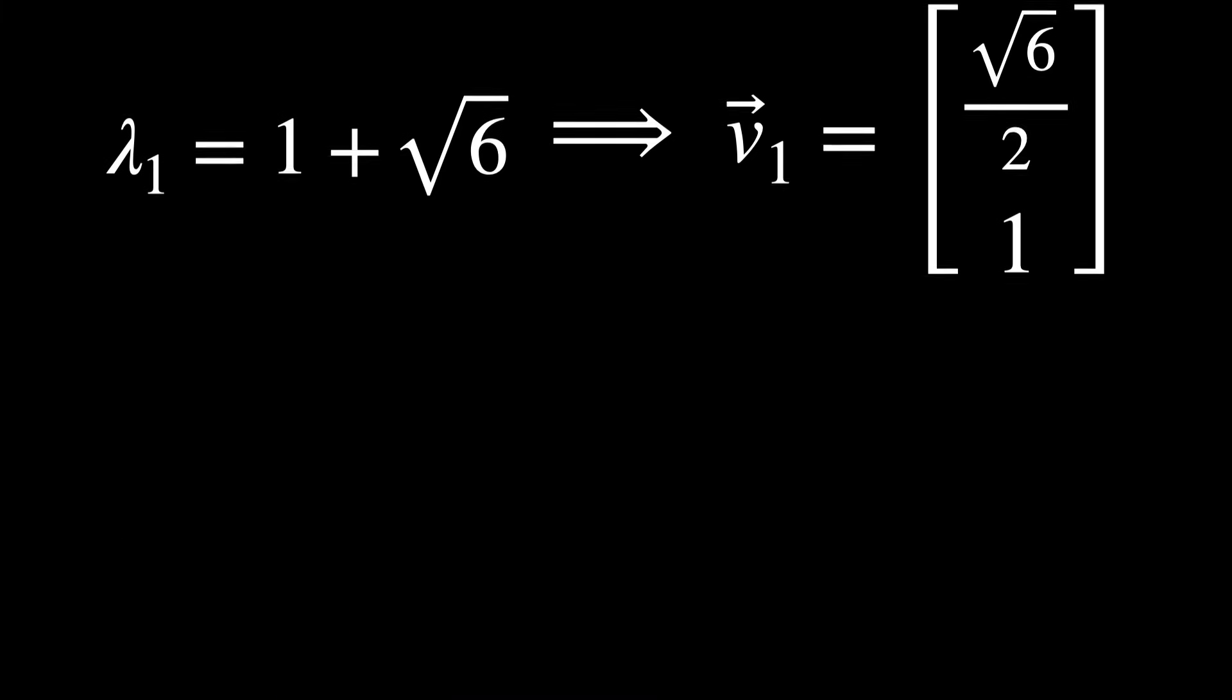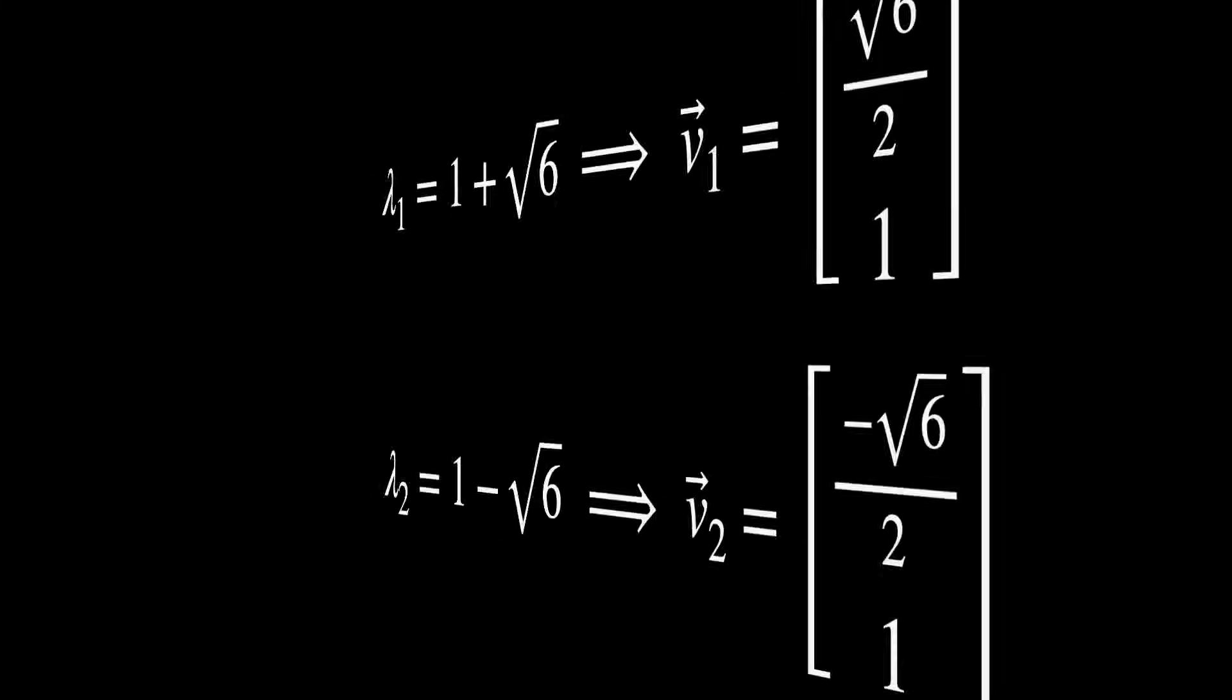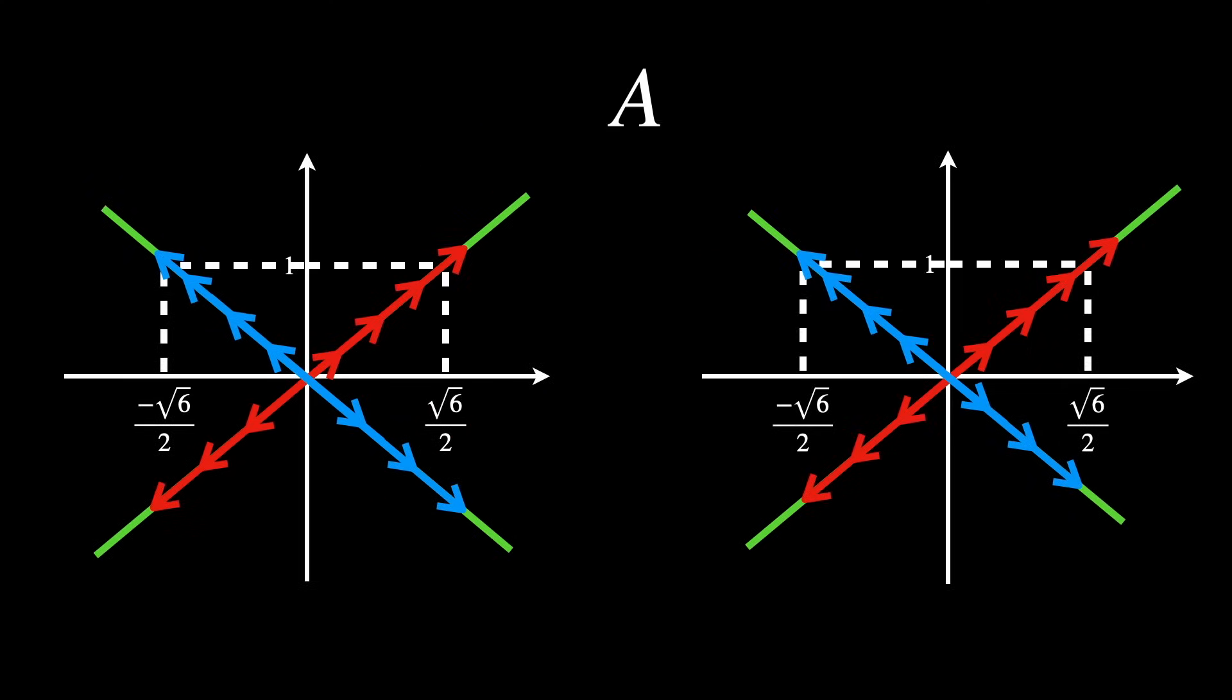What about the second eigenvector, the one for lambda two, which is one minus the square root of six? Using the same process, you can find V2. So we found out that there are two linear spaces that get stretched in the transformation.